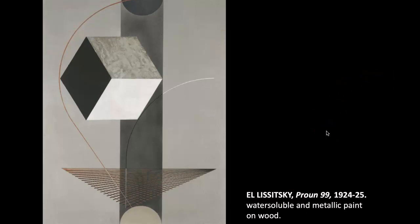Our first example is by El Lissitzky, working in Russian Suprematism. It's called 'Proun 99,' from 1924 to 1925, using water-soluble and metallic paint on wood. This work of art really reflects his early training. He was an artist who traveled — he spent some time in Germany where he studied architecture and engineering.